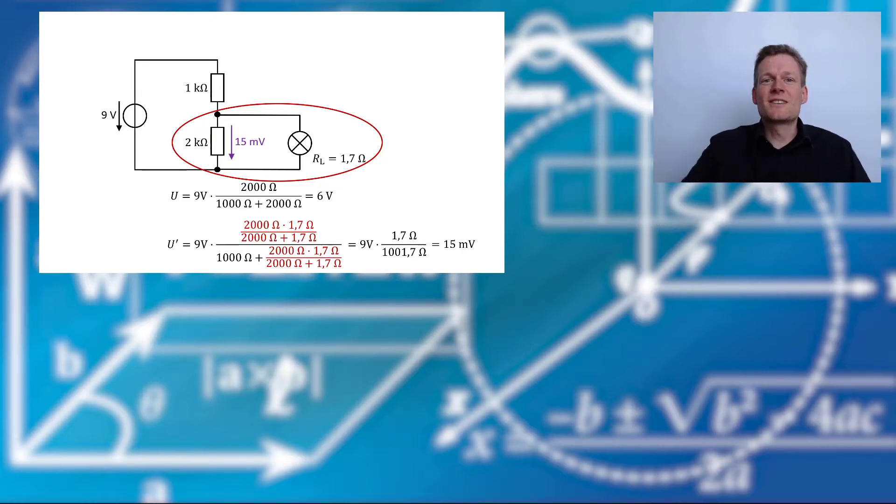And so you see, it's very important that you can't use your voltage divider rule blind in a circuit without having a look on additional resistors. Okay?